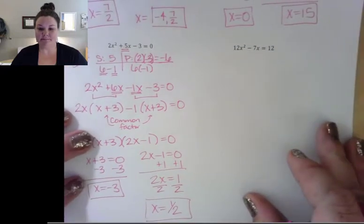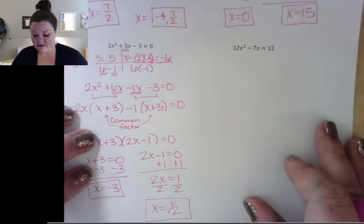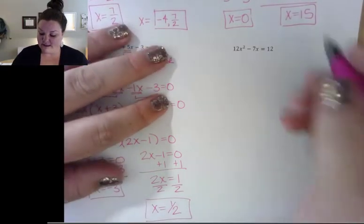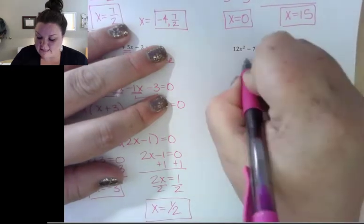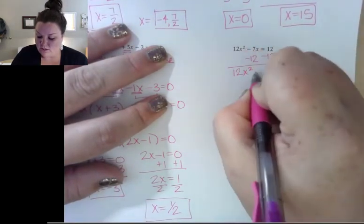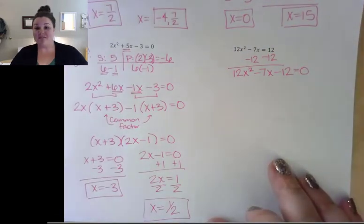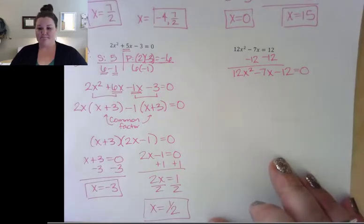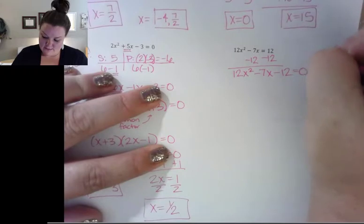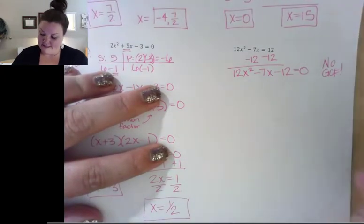Let me do one more. This one has a problem in that it's not equal to 0, so before we start factoring, make sure it's equal to zero. I'm going to start by subtracting that 12, giving us 12x squared minus 7x minus 12 equals 0. Then I look for a greatest common factor — I have none on this one.